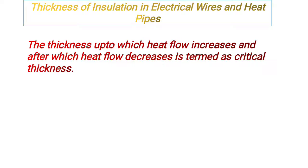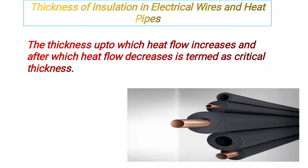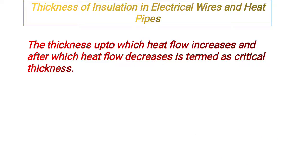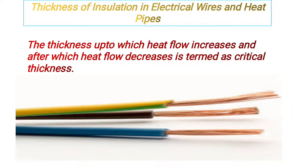The thickness up to which heat flow increases and after which heat flow decreases is termed as critical thickness. In the case of heat pipes, the thickness of insulation is greater than that of critical thickness, while in the case of electrical wires, the thickness of insulation is lower than that of critical thickness.